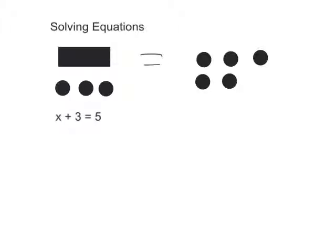That is the same as x plus 3 equals 5. I am going to show how I would solve this puzzle to find out what the rectangle must equal. I would cross out 3 circles on the left and 3 circles on the right to see that 1 rectangle equals 2 circles. So that would mean x equals 2.